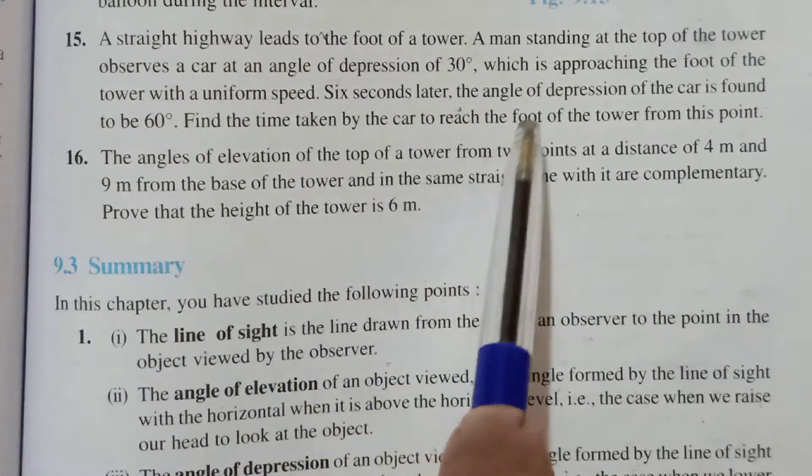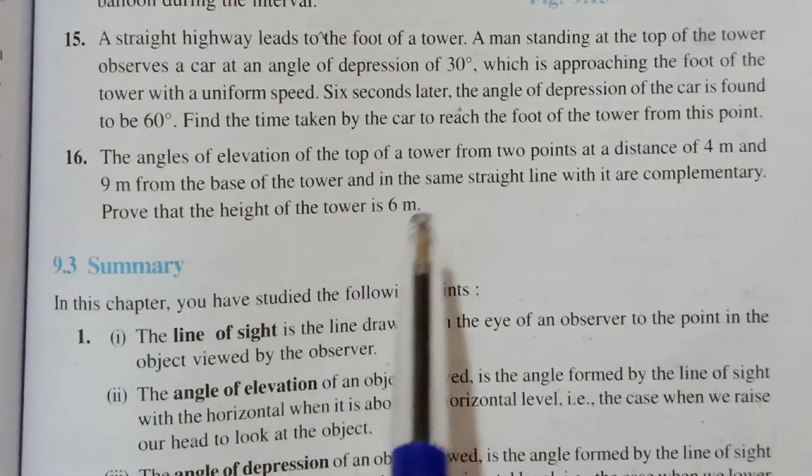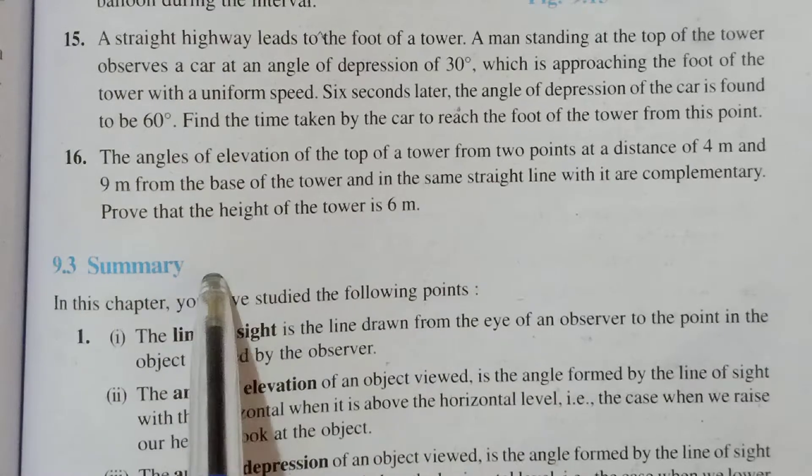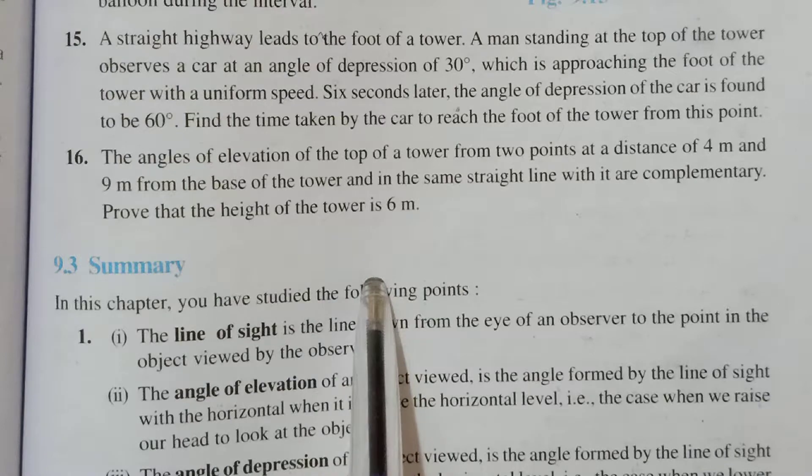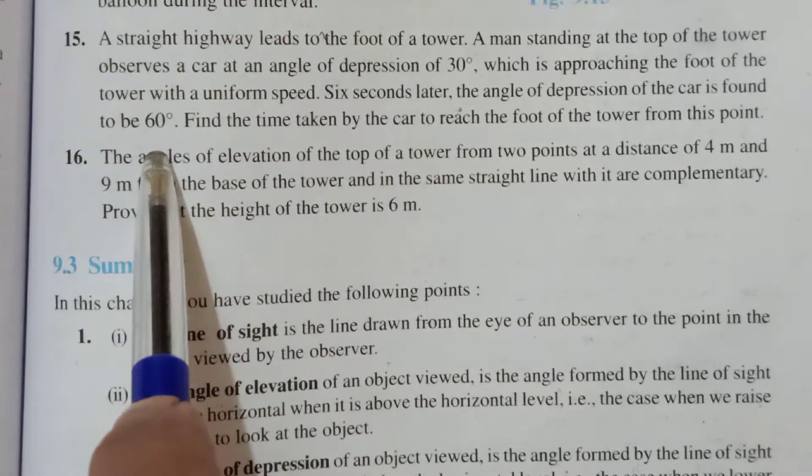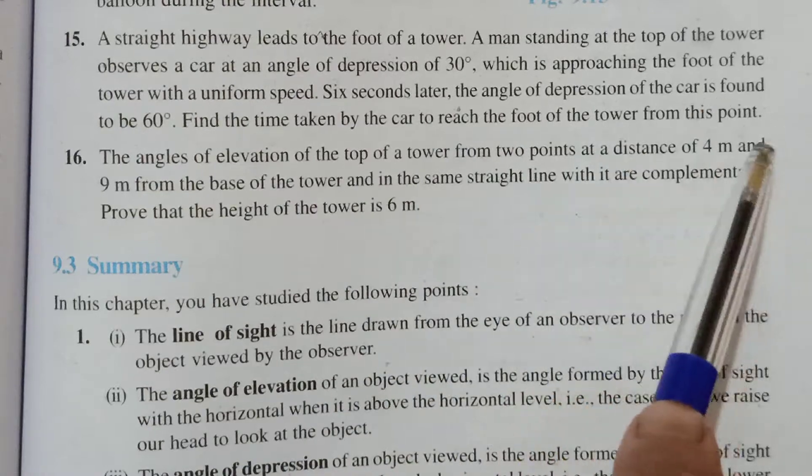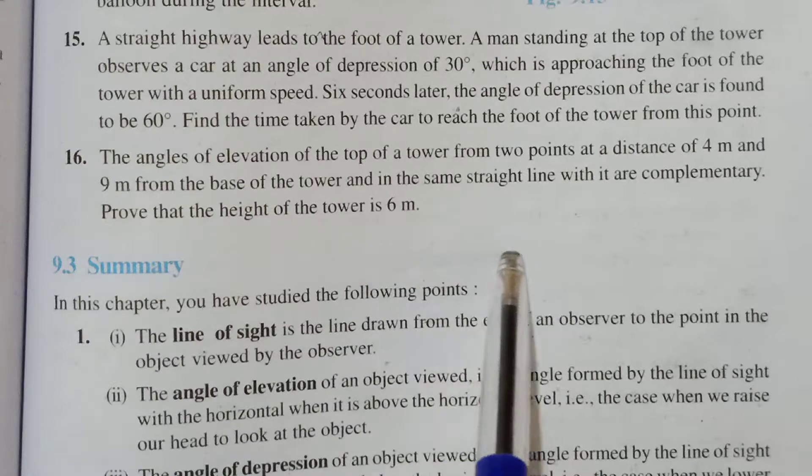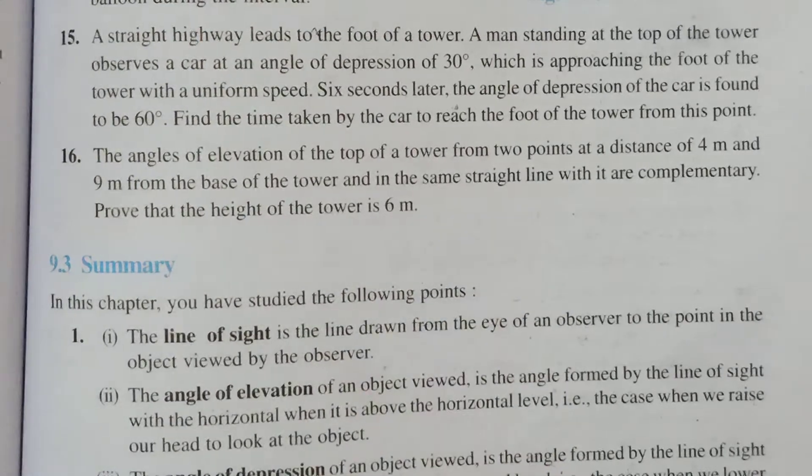Six seconds later, the angle of depression of the car is found to be 60 degrees. There is a car and a tower that is going towards the tower. So the angle of elevation was 30. After 6 seconds it will reach a little further and the elevation becomes 60 degrees. Find the time taken by the car to reach the foot of the tower from this point.